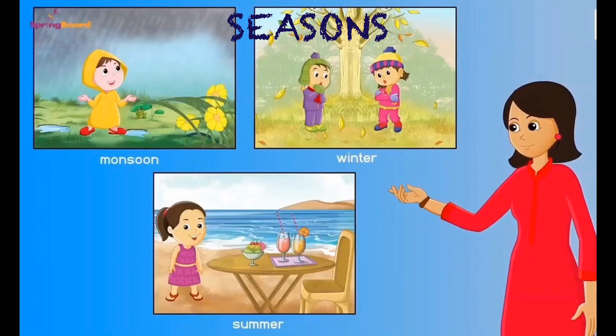Most places experience a few months of hot weather, a few months of rainy weather, and a few months of cool or cold weather in a year. Each of these divisions of the year that have a particular weather pattern are called seasons. India has three main seasons: summer, rainy season, and winter. Some areas also experience spring and autumn.